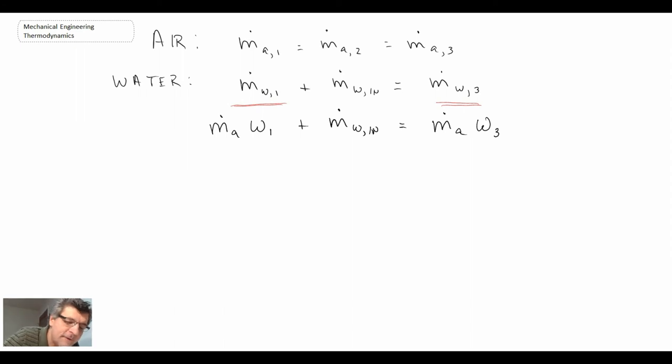And finally for energy, applying the first law. Now, in terms of inlet, what is coming in is going to be the air and the steam. Let's assume we're using steam, and then exit is just the air and water vapor.